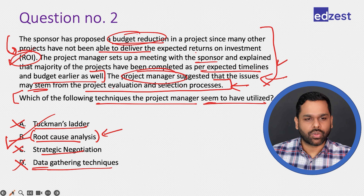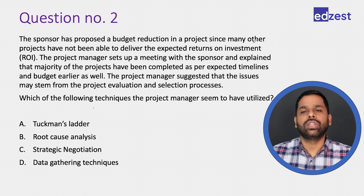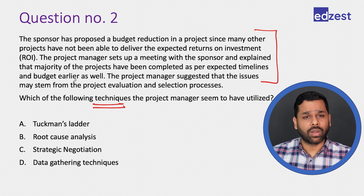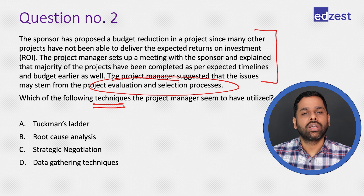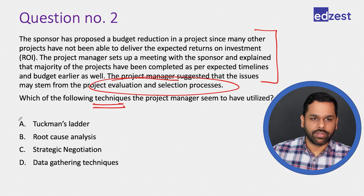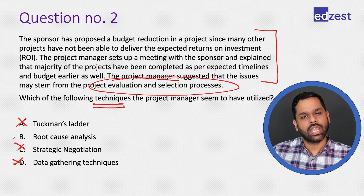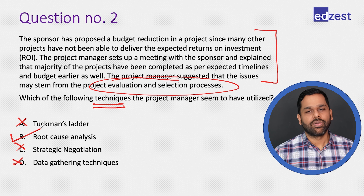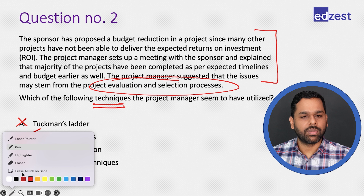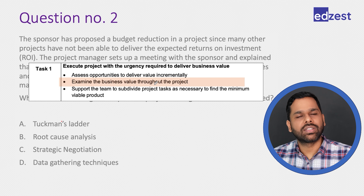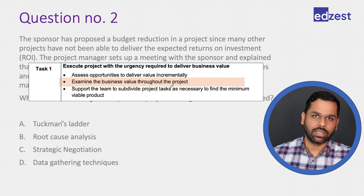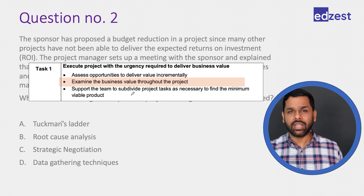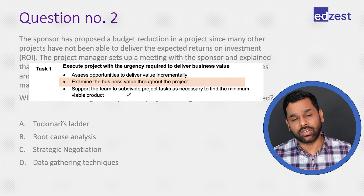So B — root cause analysis — is the correct answer. The situation was about understanding the cause of a problem, so we eliminated all other choices. This question comes from enabler two: examine the business value throughout the project. The sponsor kept checking whether value was being delivered, which is exactly what that enabler describes.